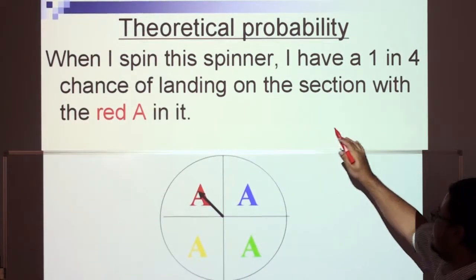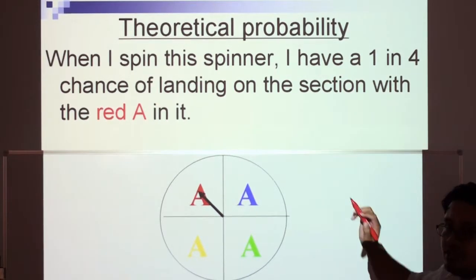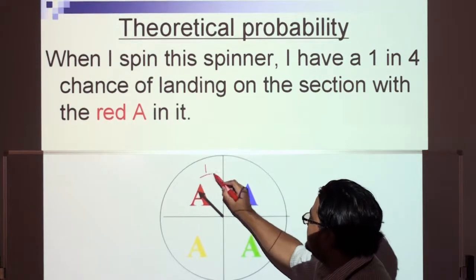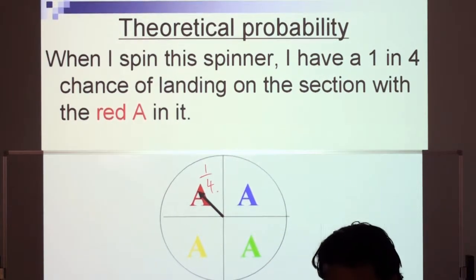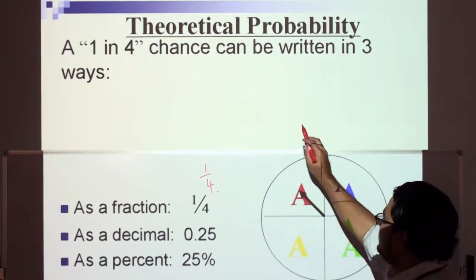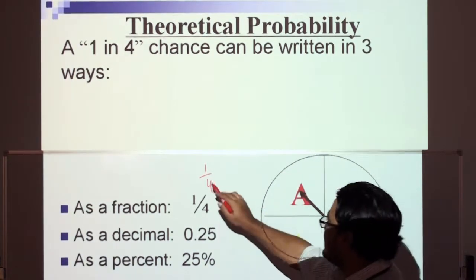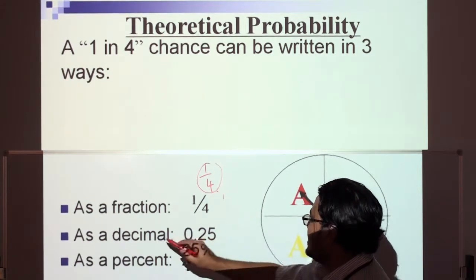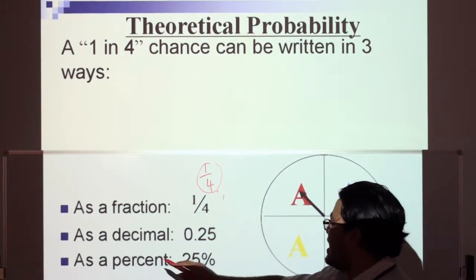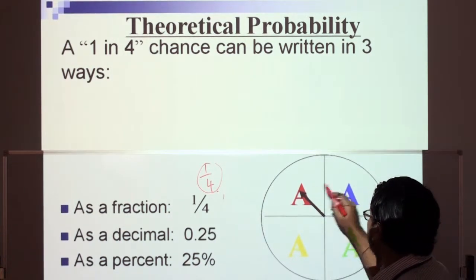Theoretical probability again. When I spin this spinner, I have a one in four chance of landing on the section with the red A in it. A one in four chance can be written in three ways: as a fraction, as a decimal — 0.25, and as a percent — 25%.